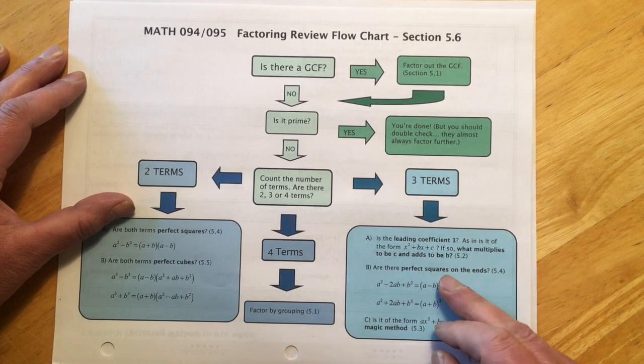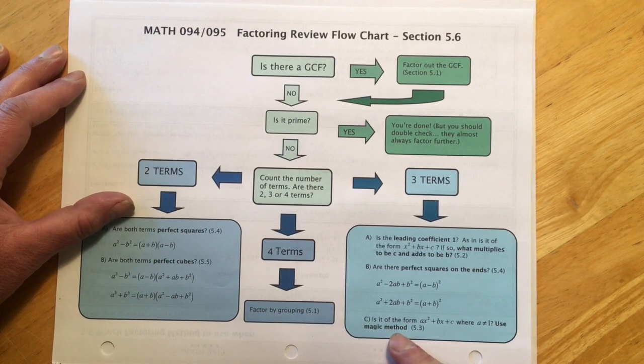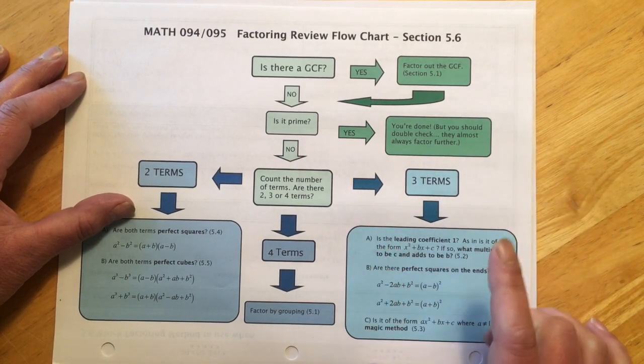And if it doesn't lead with one, it doesn't have squares on the ends, then that means you're stuck using a magic method from section 5.3. So that's our three term problems.